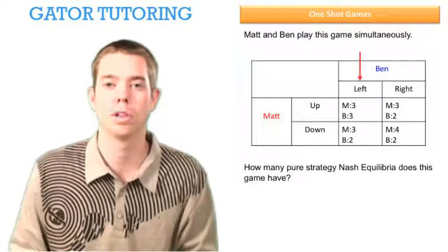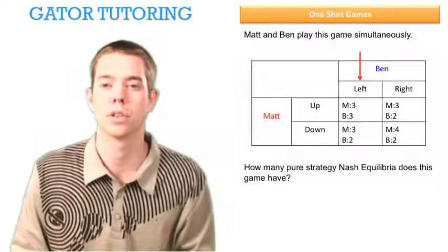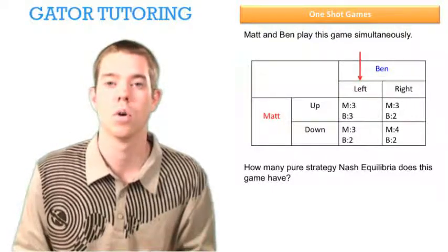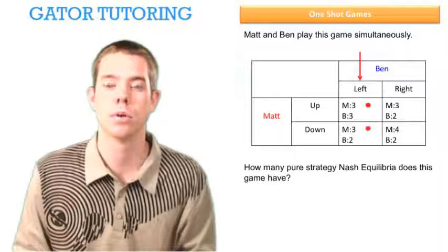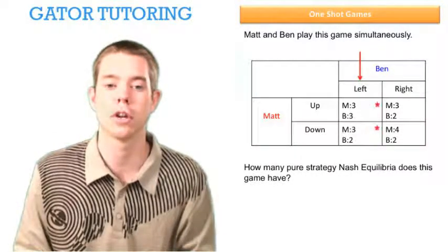So when we are looking at what Matt will do, we look at Ben's choices. Ben can either play left or right. When Ben plays left, Matt's choosing between three and three. Well he's indifferent between those choices, so we put a star next to both of them.